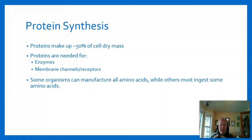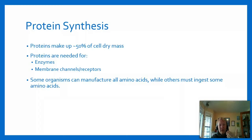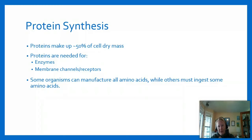Protein synthesis is another big one - proteins make up 50% of the dry mass of cells, so the cell needs a lot of proteins and needs to replace proteins that are worn out, broken, or done being used. The main proteins we discuss are enzymes and membrane channels and receptors. Some organisms can manufacture all amino acids, while others have essential amino acids they must ingest because they can't create all 20 amino acids themselves.